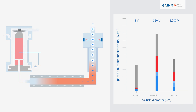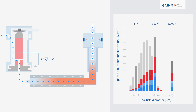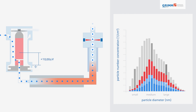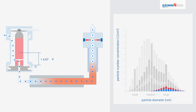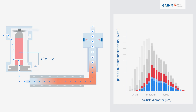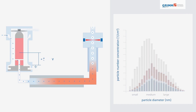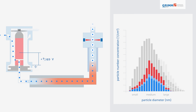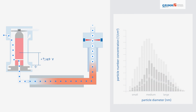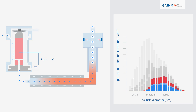A final particle size distribution is then generated, correcting for diffusion losses, charge distribution, and CPC detection efficiencies.